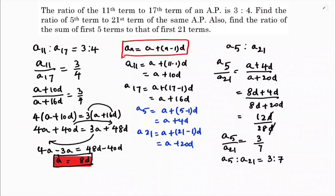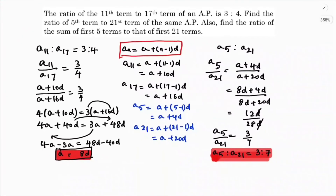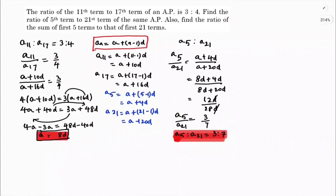So the ratio of the 5th term to the 21st term, a5 is to a21, is 3 is to 7. The answer is 3 is to 7. Now they are asking for the sum of first 5 terms to that of first 21 terms. We need to find the ratio of s5 to s21.